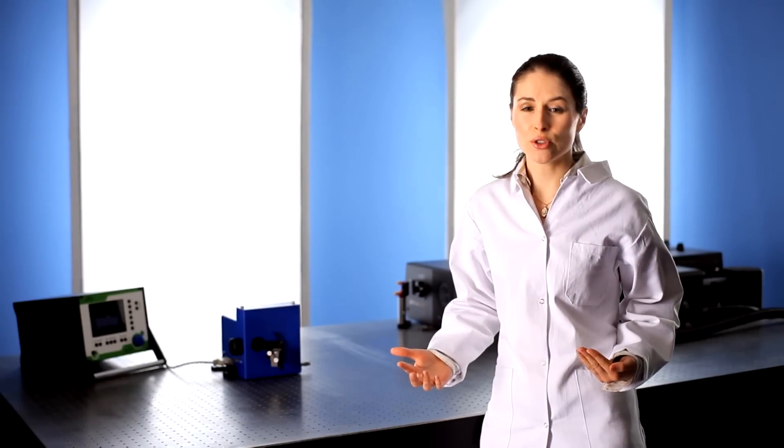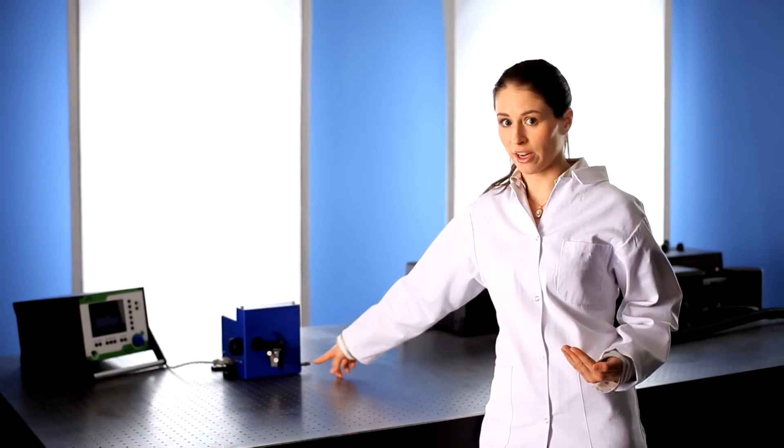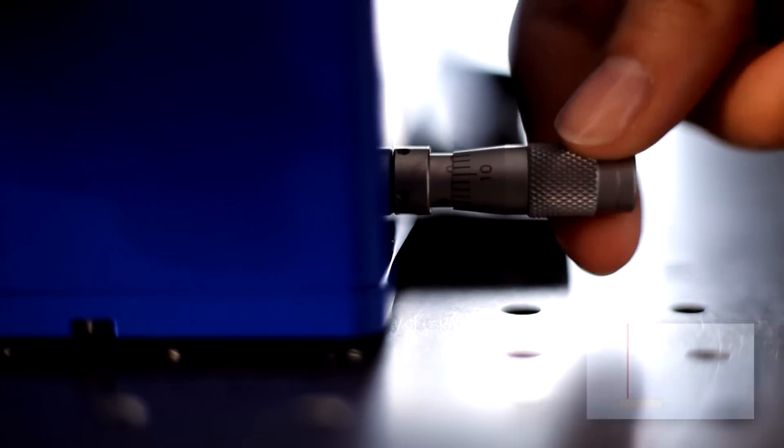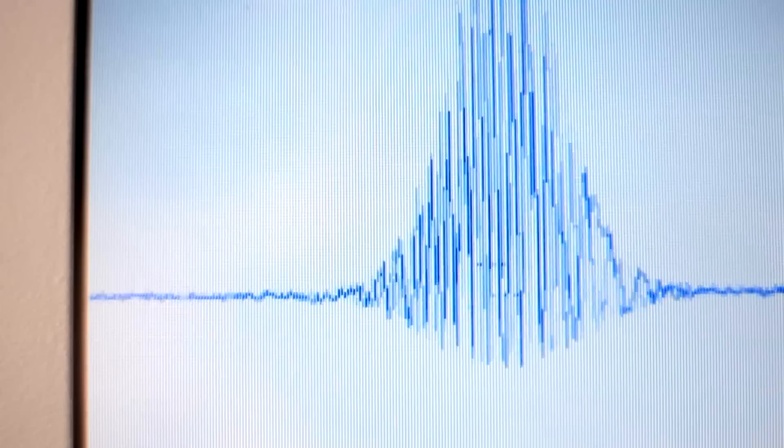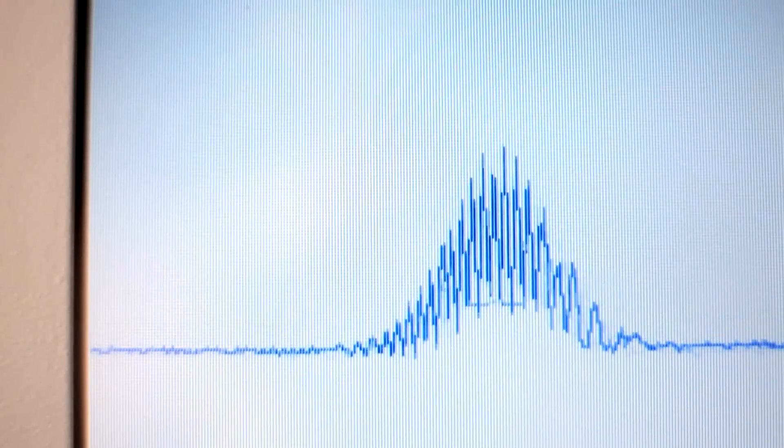And switching to non-collinear mode is easy. You can do it by turning a single micrometer screw, located here. As you turn the screw, you'll begin to see two beams in the crosshair, and your controller screen will start to show a clean measurement signal. Keep turning until the signal is perfectly smooth and background-free.